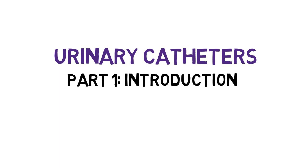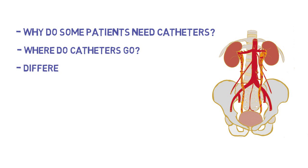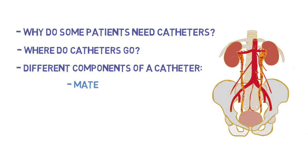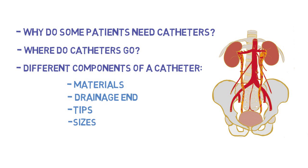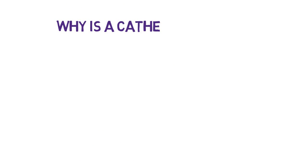Urinary catheters — everything one needs to know. Part 1: Introduction. Today we're going to discuss why some patients require a urinary catheter and whereabouts these catheters can be placed along the GU tract. We'll explore the different elements of urinary catheters, such as the materials they're made of, the difference between single, two-way, or three-way port systems, different applications for catheter tips, different French sizes, drainage systems, and the application of special coatings for urinary catheters.